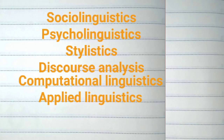Sociolinguistics is a branch of linguistics that studies the relations between language and society. Psycholinguistics studies the mental structures and processes which are involved in the acquisition, comprehension, and production of language. Stylistics is the study of how literary effects can be related to linguistic features.